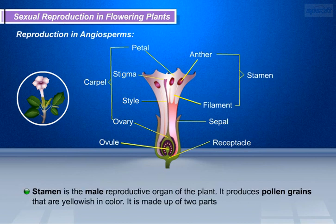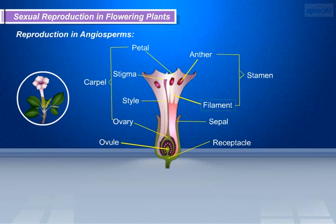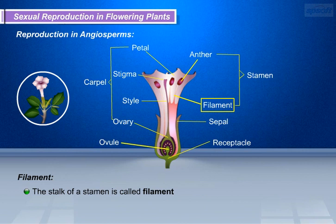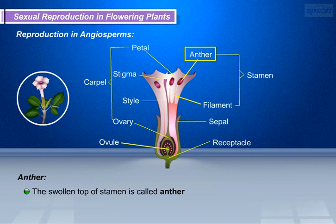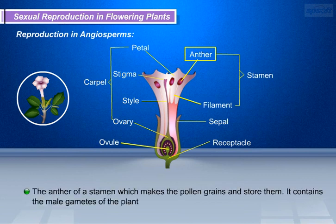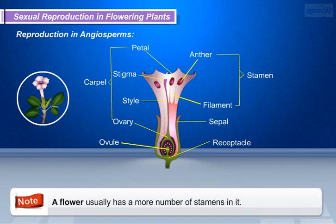Stamen is the male reproductive organ of the plant. It produces pollen grains that are yellowish in color. It is made up of two parts: a filament and an anther. The stalk of a stamen is called filament. The swollen top of the stamen is called anther. The anther of the stamen makes the pollen grains and stores them. It contains the male gametes of the plant. Note that a flower usually has a greater number of stamens in it.